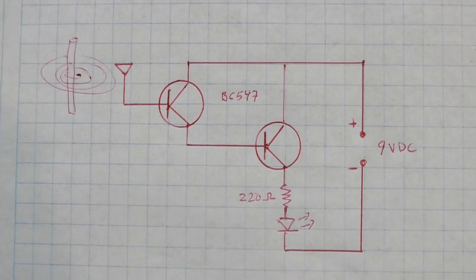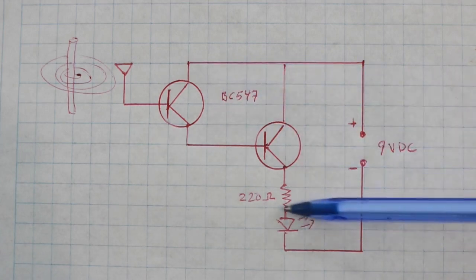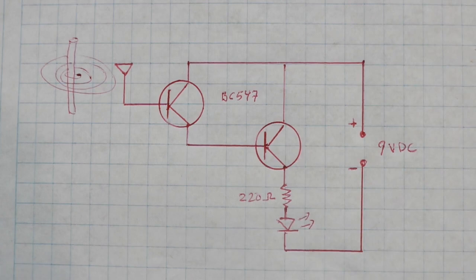As you can see it is very simple. We only need a couple of transistors, a resistor and the LED and we feed the circuit with 9 volts DC.